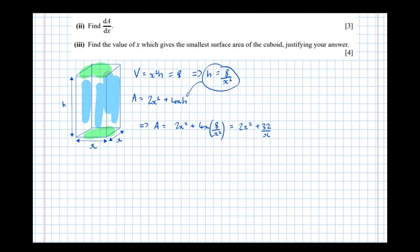So part 2: Find dA by dx. Well, A equals 2x squared plus... And this next term, 32 over x here, we can't yet differentiate when it's in that form. We need to write it in an index form. We can rewrite that as 32x to the power of minus 1, which means that dA by dx equals 4x minus 32x to the power of minus 2.